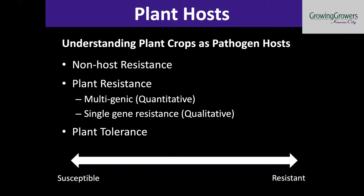Let's talk about plants as hosts of pathogens. There are lots of different things that can happen when a pathogen meets a host. In many cases — really in 99.9% of all the combinations of microbes and plants — most of the time you have non-host resistance. For whatever reason, the cellular mechanisms of that host don't allow for that pathogen to enter and colonize the plant tissue. We think of plant pathogens as being fairly generalistic, but for the most part there's actually a very tight relationship between pathogens and their hosts.